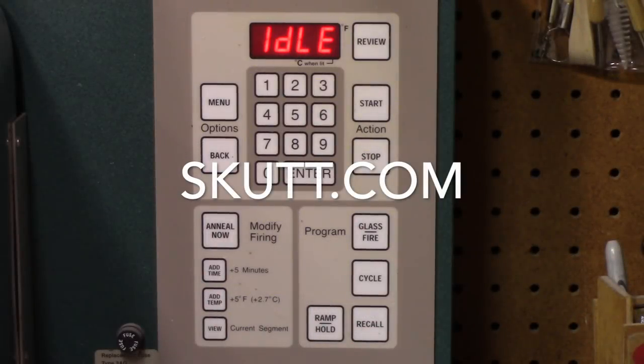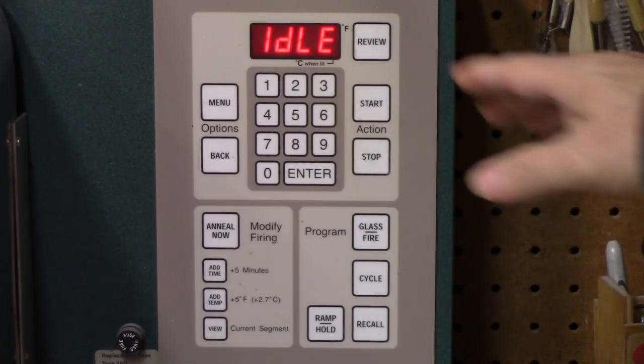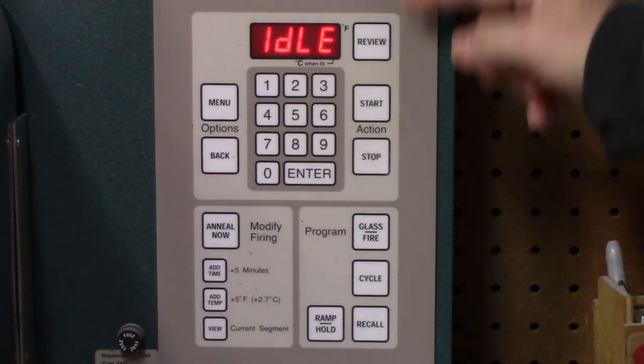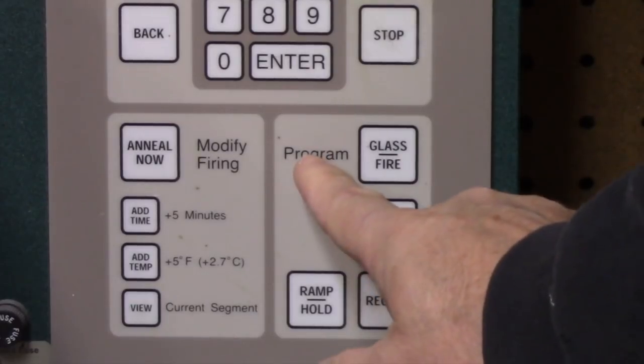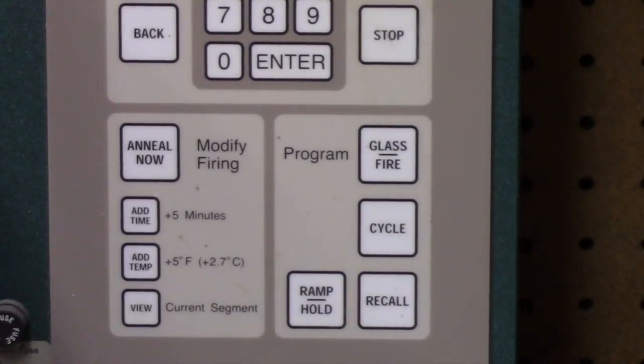This is a Skutt kiln equipped with a key entry pad. The exact steps and terminology will vary from one make of kiln to another, but the process is largely the same. Read the instructions that came with your kiln. In the program section of the keyboard, I'm going to press Ramp Hold.